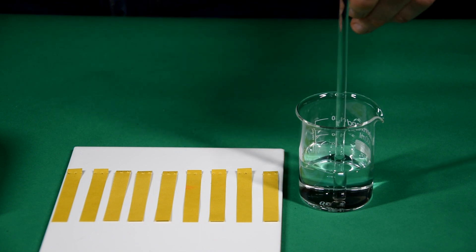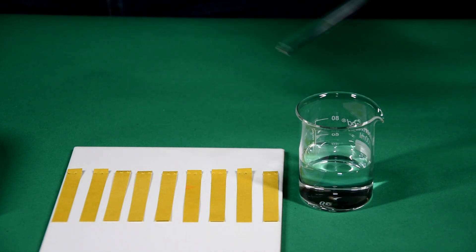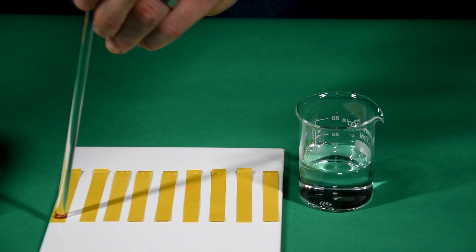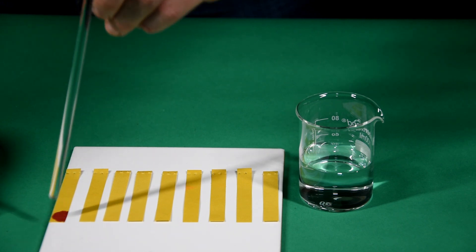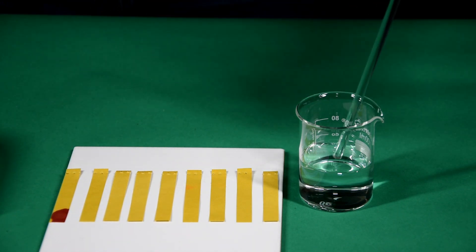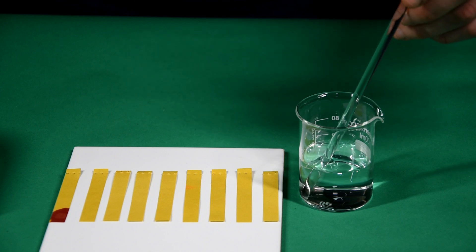We've laid out 9 pieces of universal indicator paper on a white tile. Then, using a glass rod, drop a sample of the acid onto the first sheet of universal indicator paper.